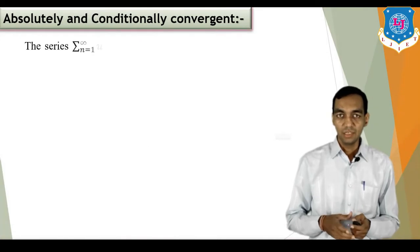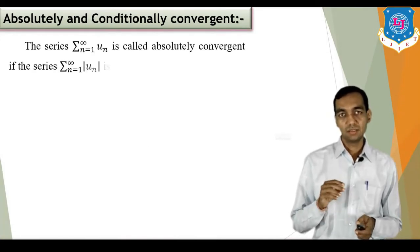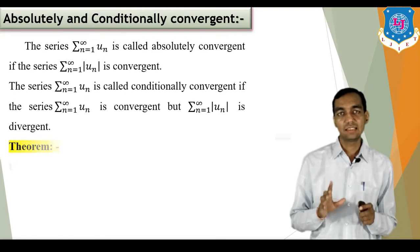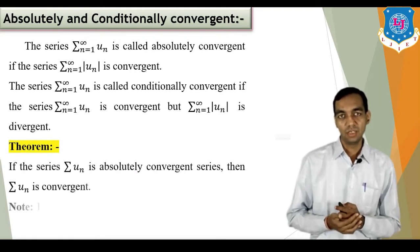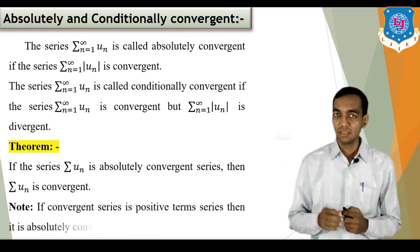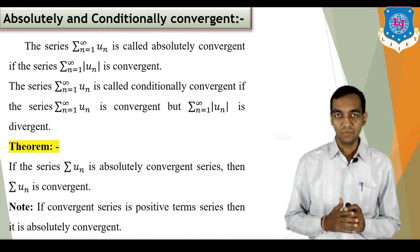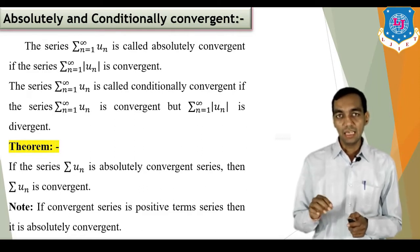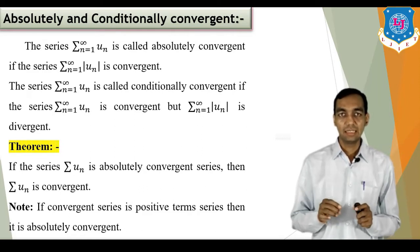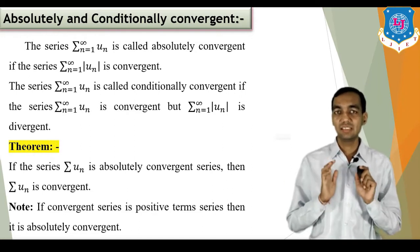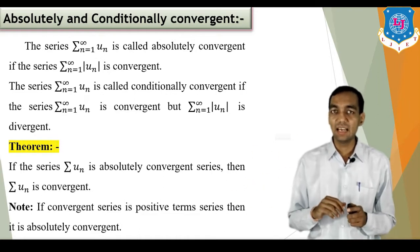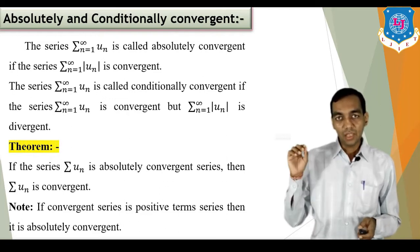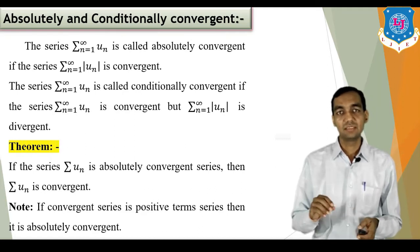First of all, what is absolutely or conditionally convergent? If sigma u_n is the given series, then it is said to be absolutely convergent if sigma |u_n| is convergent — that means the mode series of the original series is convergent, then sigma u_n is said to be absolutely convergent. Secondly, the series is said to be conditionally convergent if sigma u_n is convergent but sigma |u_n| is divergent — that means the given series is convergent but its mode series is divergent. In that case the series is said to be conditionally convergent.